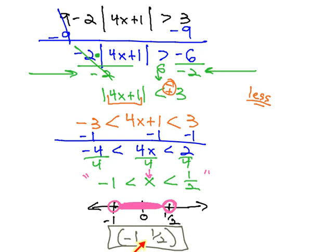This tells us that any value between negative 1 and 1 half, when plugged in for x in our inequality, will give us a true statement. Anything outside of negative 1 and 1 half gives us a false statement.